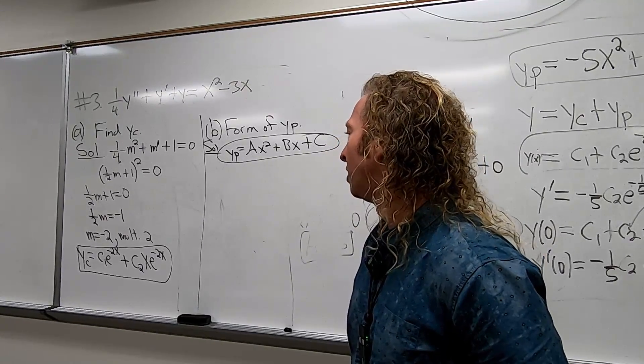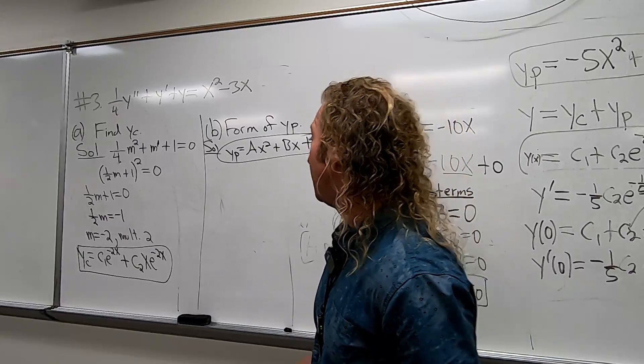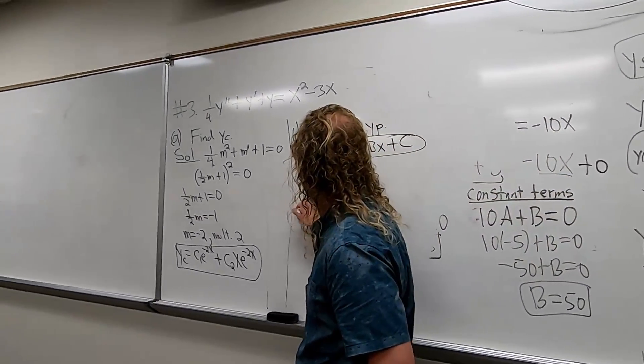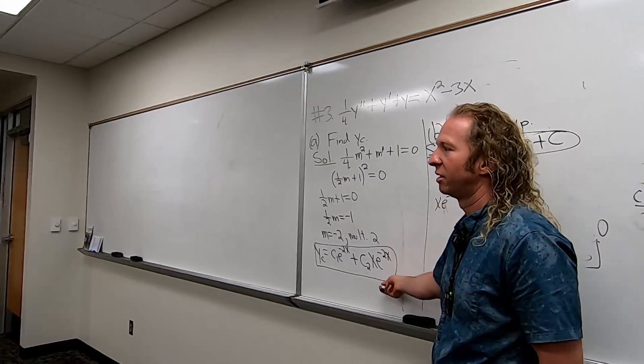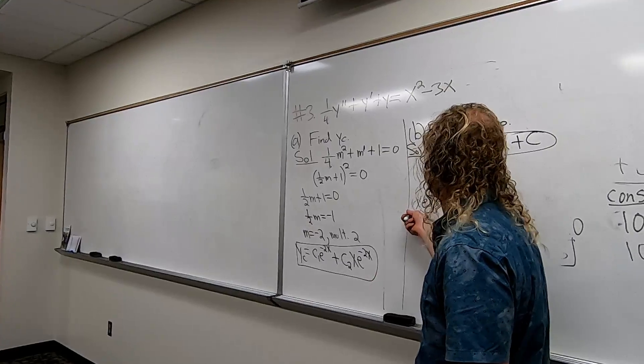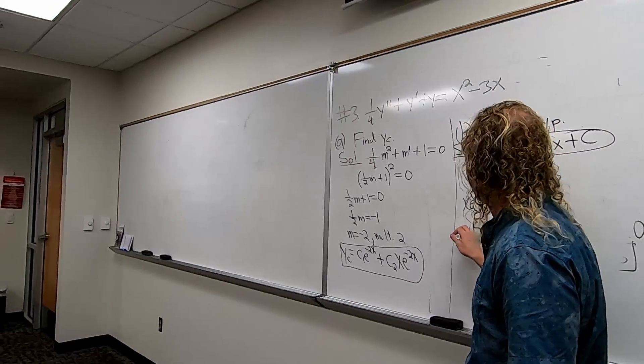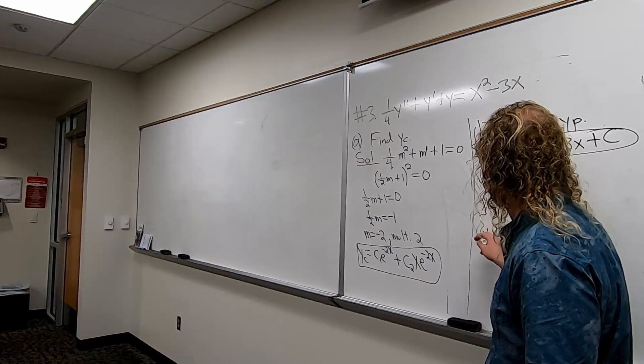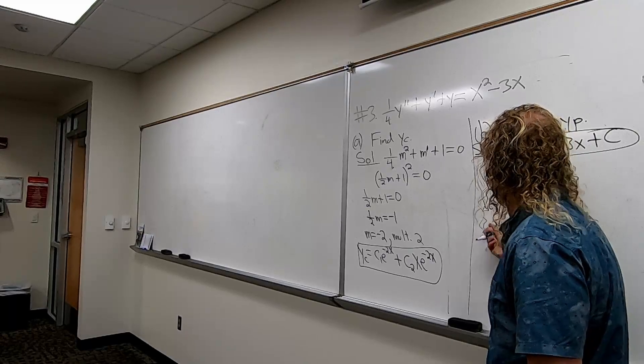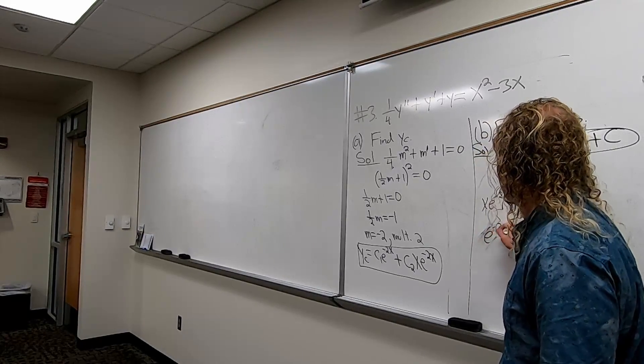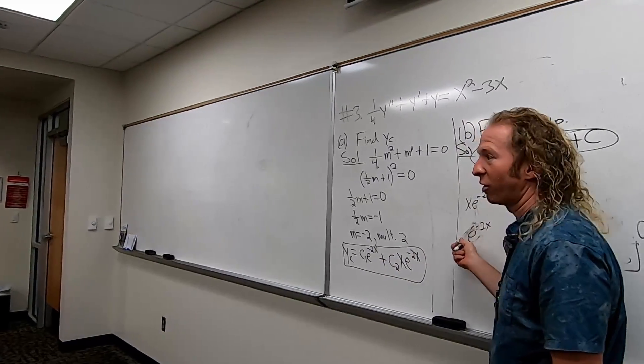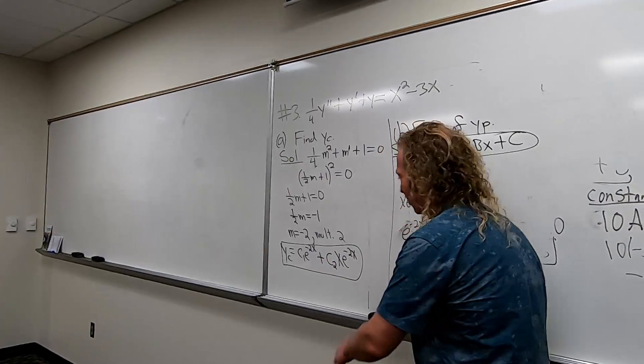Either or would be repetition. But just an X wouldn't be repetition? Just X. If you had something with like, that would be repetition with this. Right? Then you'd have to have X squared. If you had in YP, if you had this in YP, then yeah, then you have to put an X squared here also because X won't be enough.